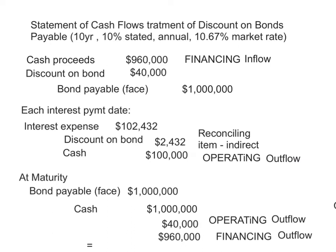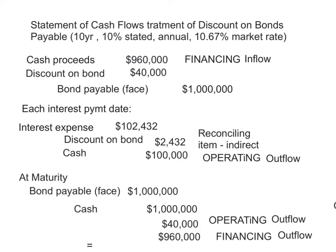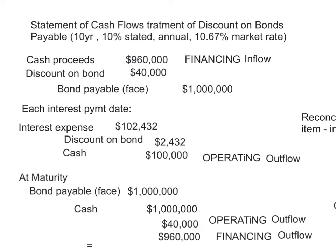At each interest payment date, we record interest expense. For this bond in the first year, that would be $102,432. We pay out cash at the stated rate, so we always pay $100,000. The difference between those two is the amortization of the discount. In the statement of cash flows, we're only interested in the cash piece, so we have an operating outflow for $100,000.